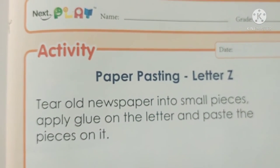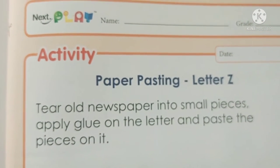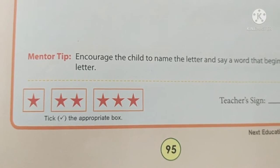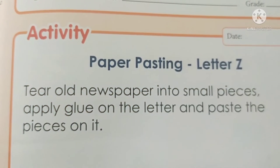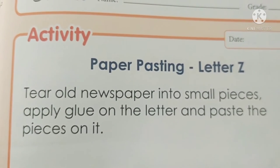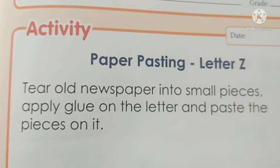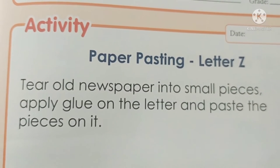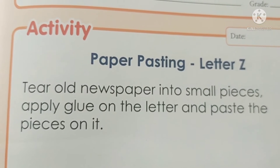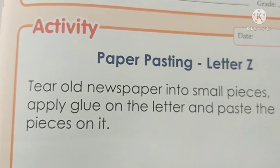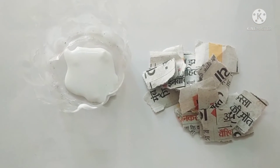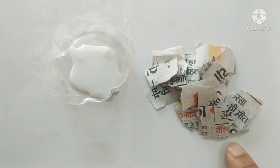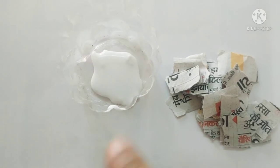Now children, this is activity time. Open page number 95. Activity: paper pasting letter Z. Tear old newspaper into small pieces. Apply glue on the letter and paste the pieces on it. For this activity we need small pieces of newspaper and glue.